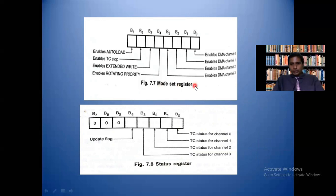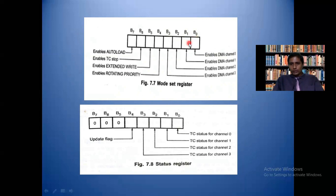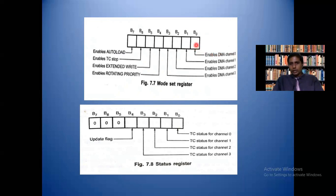We have two 8-bit registers: the mode set register and the status register. The mode set register has 8 bits, B0 to B7. B0 enables DMA channel 0 — if B0 is 0, channel 0 is disabled; if it is 1, channel 0 is enabled. Similarly, B0 to B3 enable individual channels: B0 enables channel 0, B1 enables channel 1, B2 enables channel 2, and B3 enables channel 3. This register is controlled by the read-write control logic, which is in turn controlled by the processor.